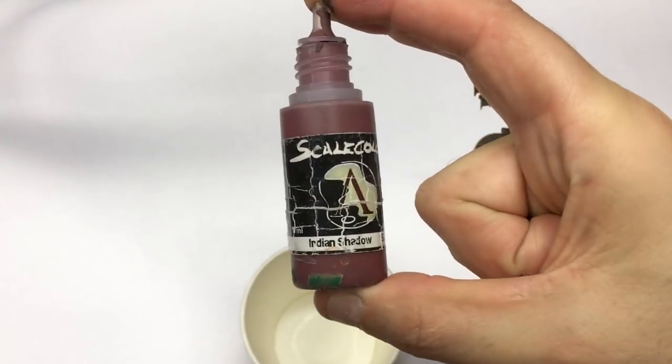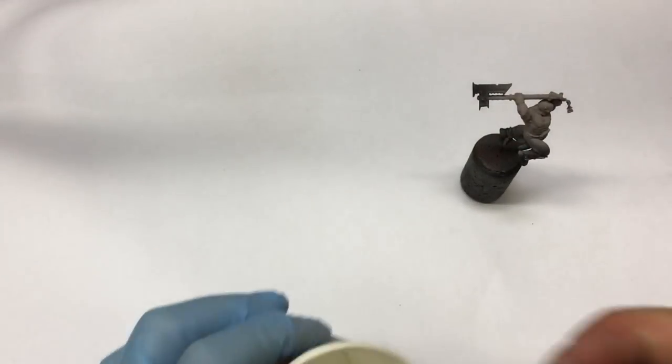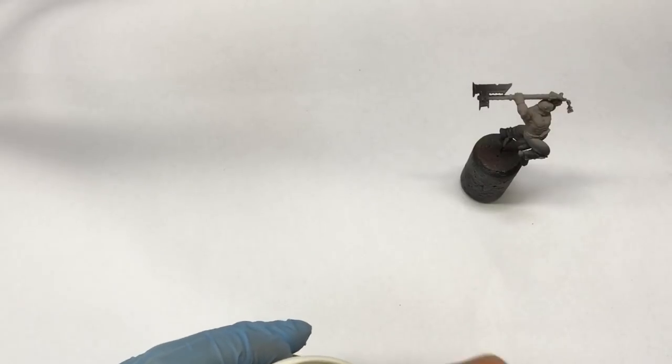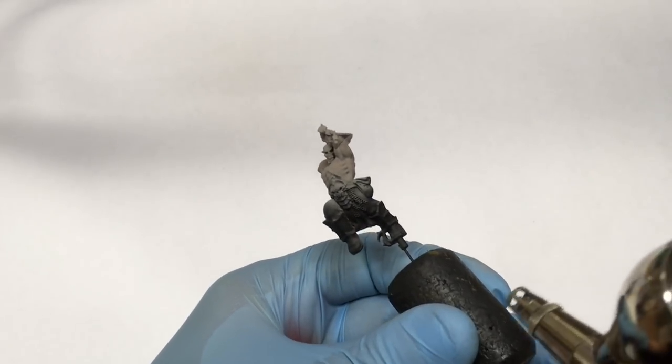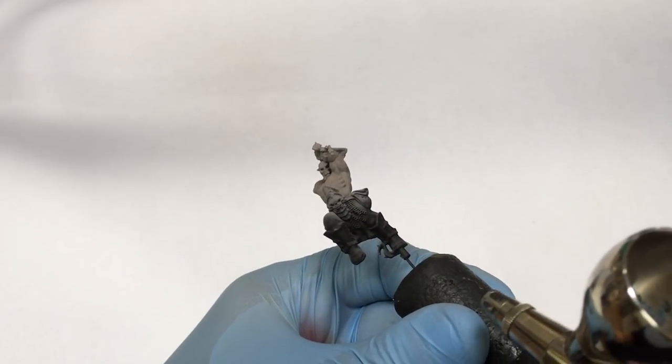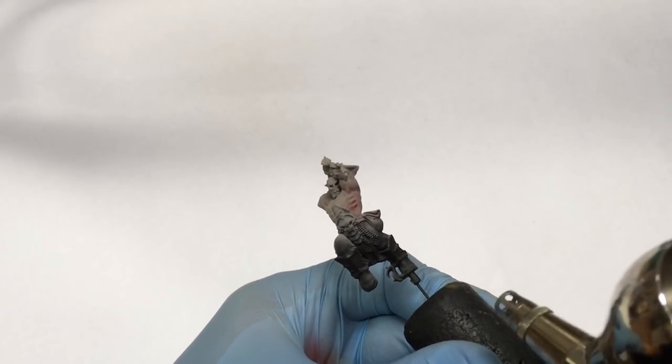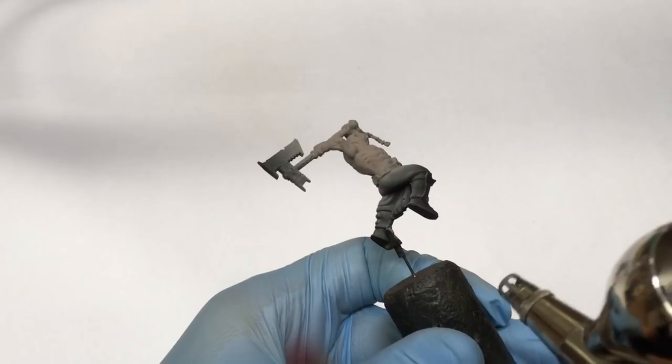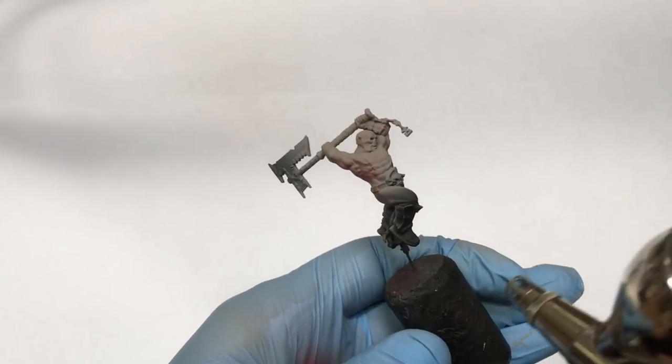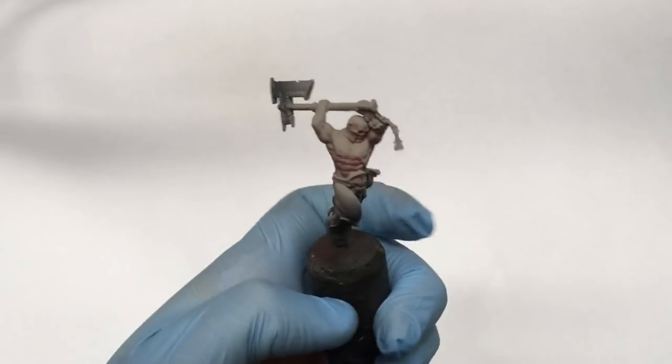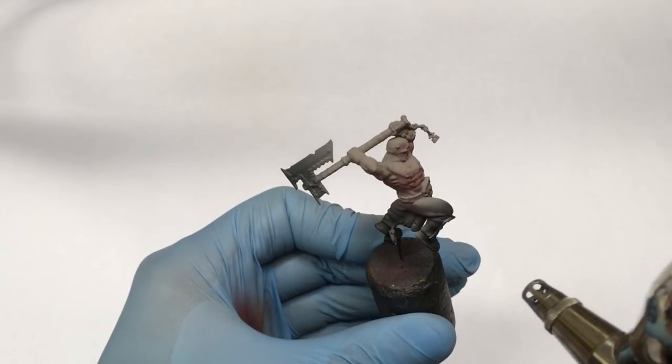So back to our Khorne guy, we need to do the shadows, and in this case I will use Indian shadow from Scale 75. This is business as usual. We are spraying from the bottom up and just aiming at the very base of his torso. This color may be a little bit too bright and too red, but we will see after this one layer.